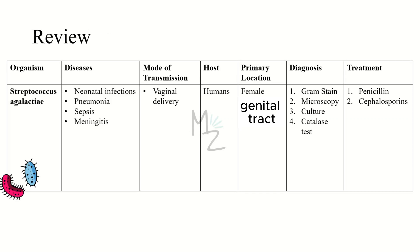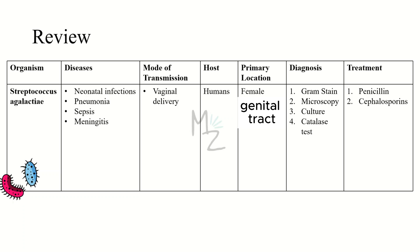Let's review everything quickly. Today we talked about streptococcus agalactiae, which is responsible for causing neonatal infections like pneumonia, sepsis, and meningitis, but can also cause adult infections like bacteremia and endometritis. It is transmitted in utero or during delivery; humans are the host and the primary location is the female genital tract. Diagnosis is based on gram staining, microscopy, culture, and catalase test, and it is treated with intrapartum penicillin G and cephalosporins. That's it — hope you enjoyed it!